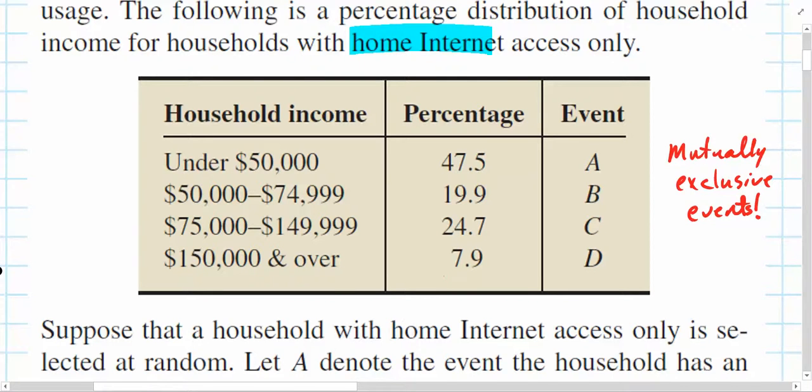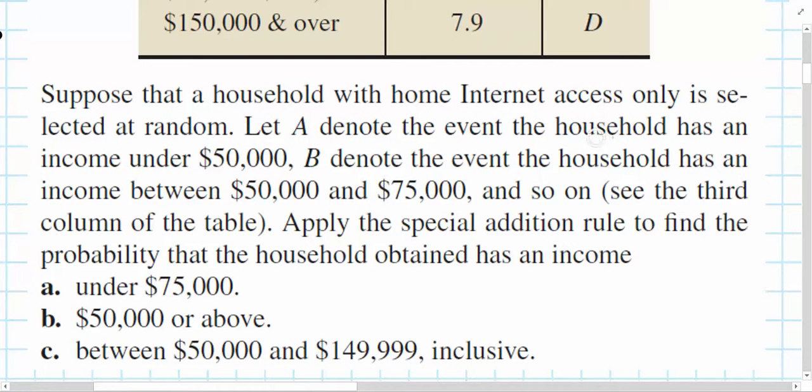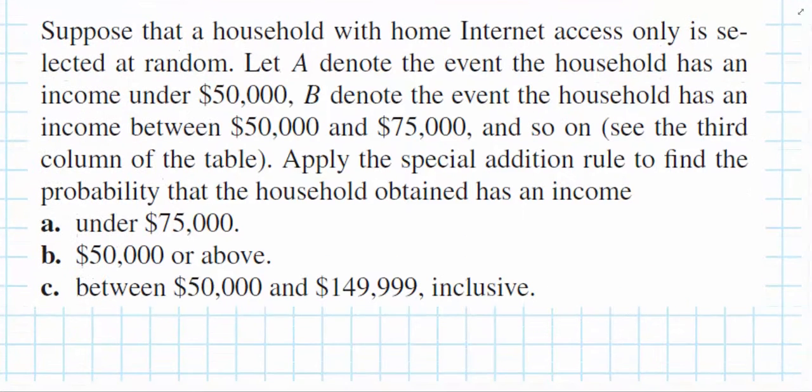Suppose that a household with home Internet access is selected at random. Let A denote the event of the household has an income under $50,000, so on and so forth. This is them describing the events again. We need to apply the special edition rule to find the probability that the household obtained has an income under $75,000 for Part A, $50,000 or above for Part B, and Part C between $50,000 and $149,999 inclusive.